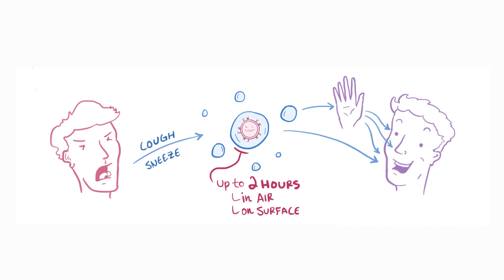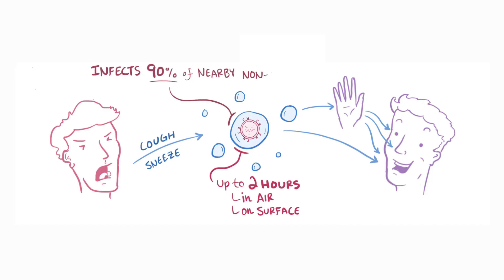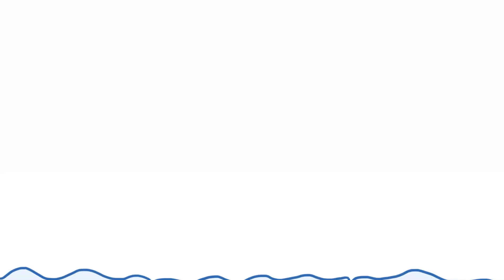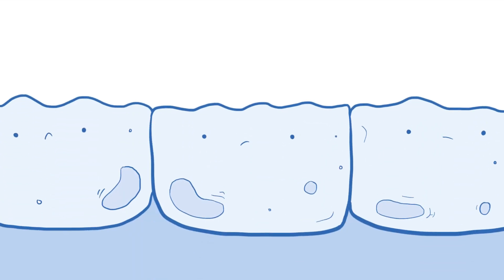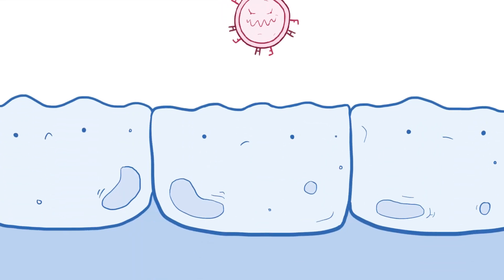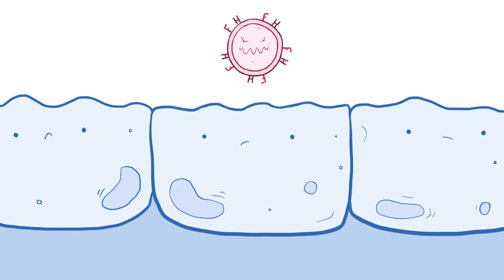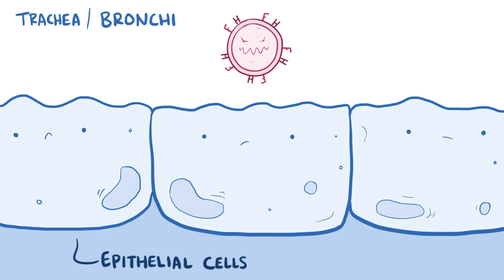Measles is so contagious that if one person has it, 90% of nearby non-immune people will also become infected. Once the measles virus gets onto the mucosa of an unsuspecting person, it quickly starts to infect the epithelial cells in the trachea or bronchi.